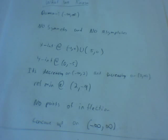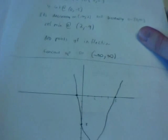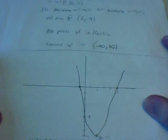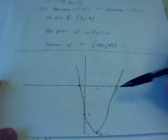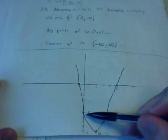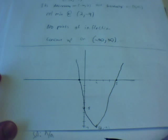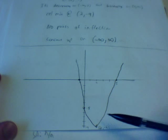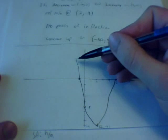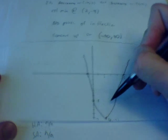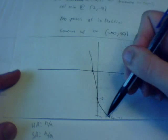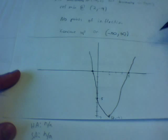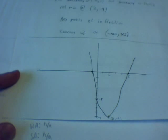So the graph is going to look like this. We have our x-intercepts here and here, a y-intercept there, and our relative minimum at (2, -9). It's going to be concave up through the whole thing, decreasing to x = 2 and increasing to positive infinity.